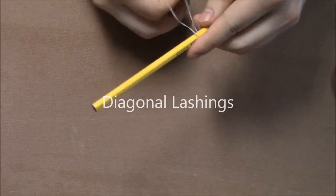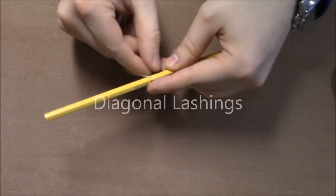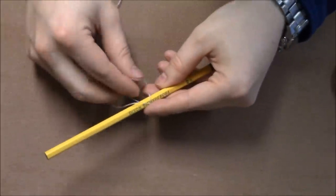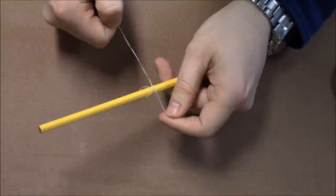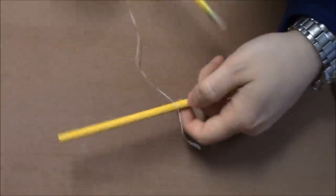We will be constructing our A-frames using diagonal lashings. Start by tying the string to a pencil. I am using a clove hitch, but many other knots will work. We then cross the two pencils and wrap them together diagonally.